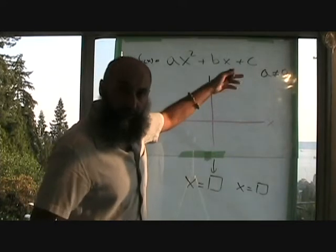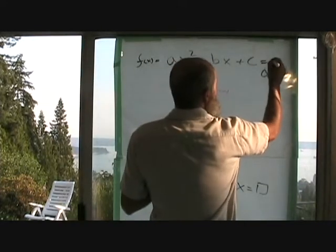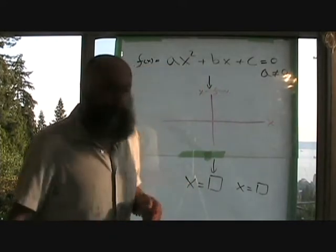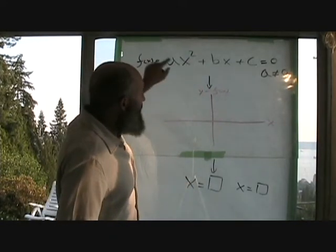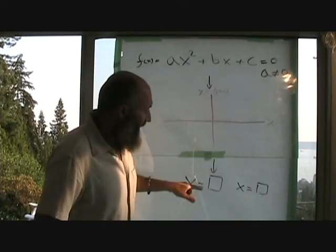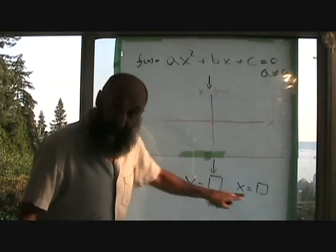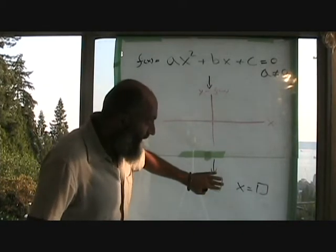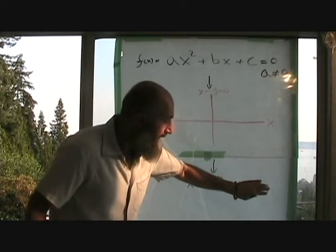When we're solving for these equations, all we do is set it equal to zero. Whenever we're solving for quadratic functions, we can have either two solutions, two x-intercepts, we could have one x-intercept, or we might have no x-intercepts.